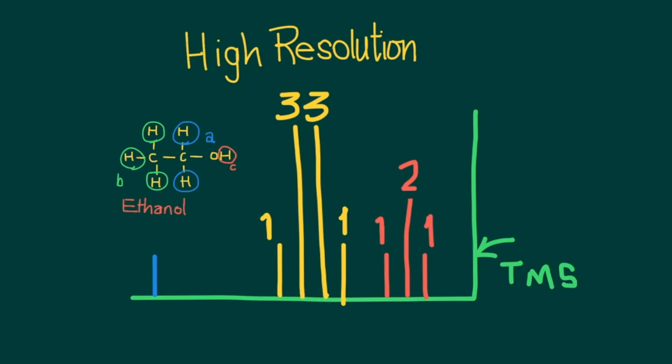But when we consider the high-resolution spectrum of ethanol, each of the single peaks in the low-resolution spectrum appears as a peak split into a distinct pattern. And here, for these three identical hydrogens which are closest to the TMS reference in the low-resolution spectrum, we see a split where the line in the middle is twice as long as two lines on either side. A triplet, in other words, split in the ratio of one to two to one.